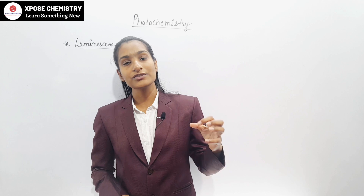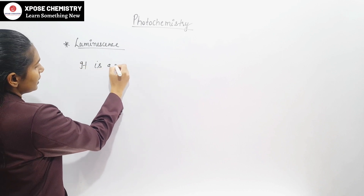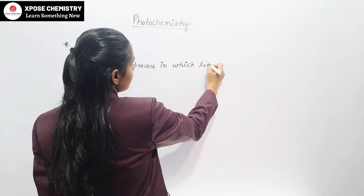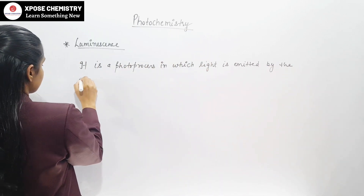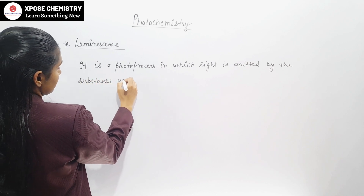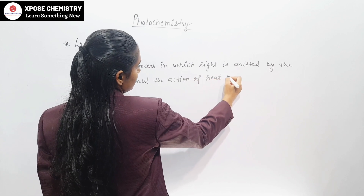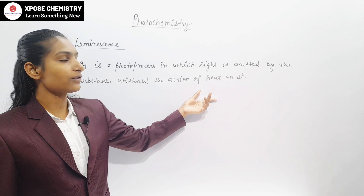Hello students, let's continue the photochemistry chapter in this video. The next heading is luminescence. Luminescence is a photoprocess in which light is emitted by a substance without the action of heat on it. That means no heat is used and the substance does not give heat, but the substance emits light.